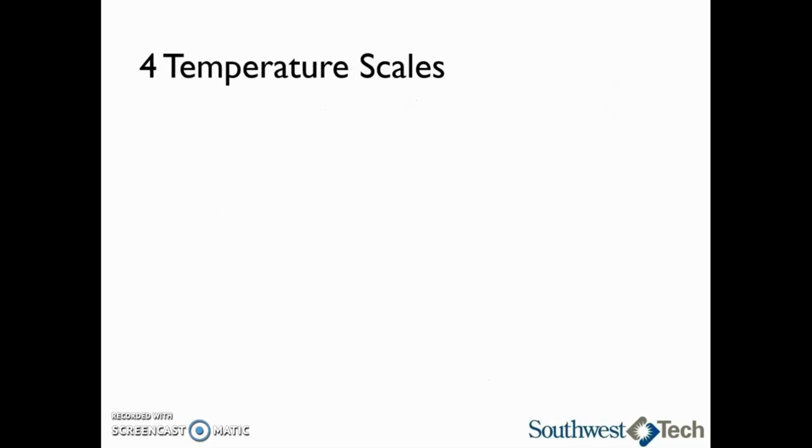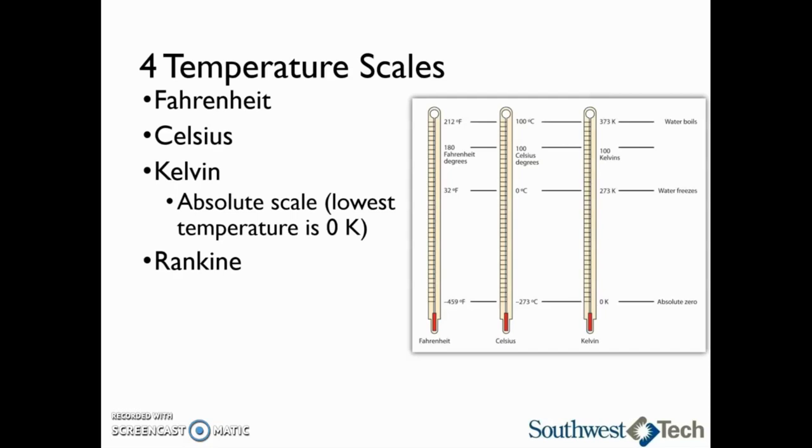When we are measuring temperature, there are four different scales we could use. They are Fahrenheit, which we are most familiar with, Celsius, Kelvin, and Rankin. Kelvin and Rankin are both absolute scales. Absolute scales give us the lowest possible limit of temperature as absolute zero. At a temperature of absolute zero, all particle movement ceases to exist. Absolute zero has never been achieved in a lab setting, but scientists have gotten very close.